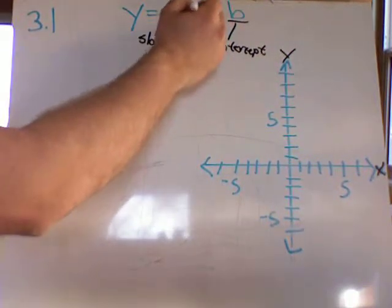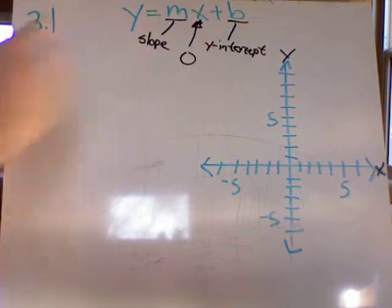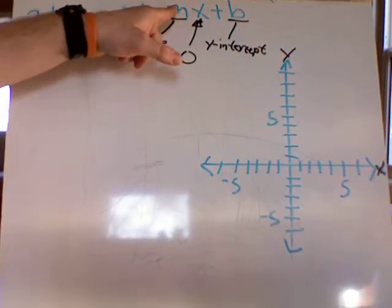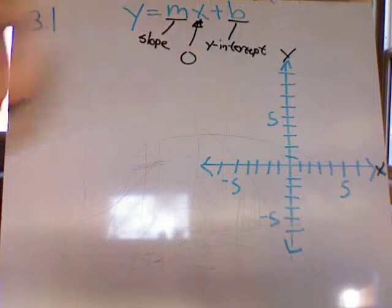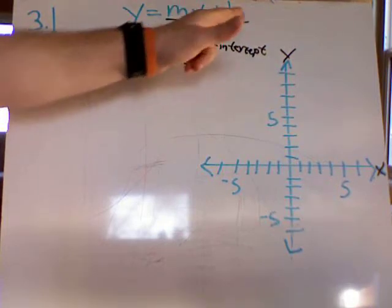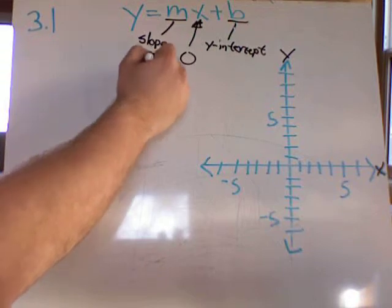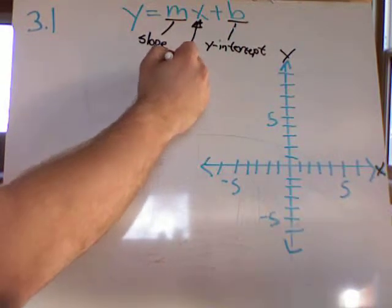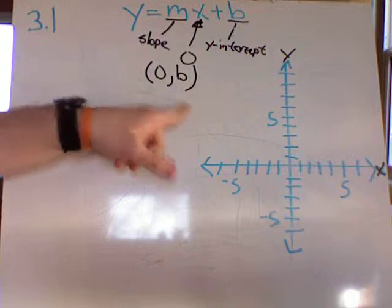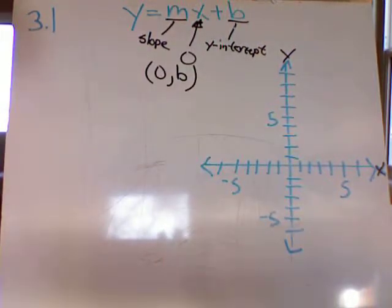So what would happen if we plug a zero in for x? Well, we're going to take whatever m is, multiply it by zero. What's the end result? It's a zero. So we take zero, add b, y equals b. So the data point zero, comma b falls on this graph.